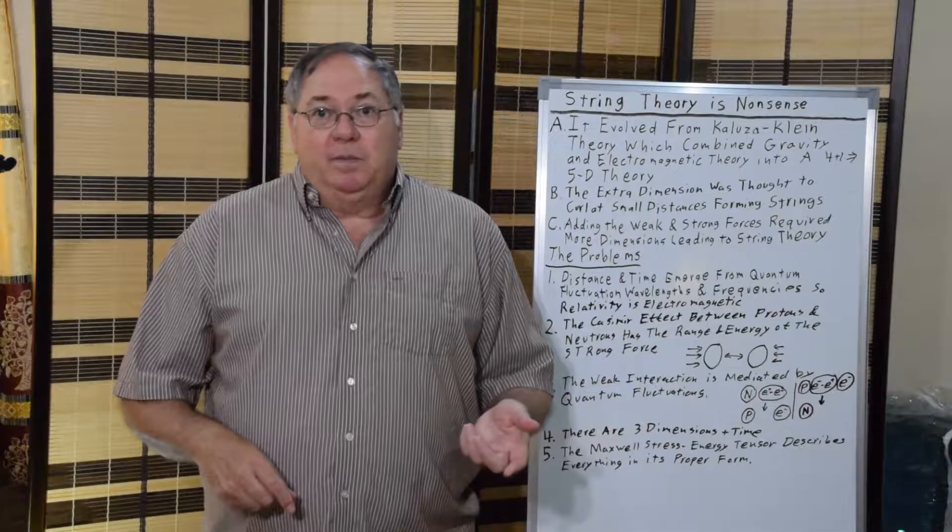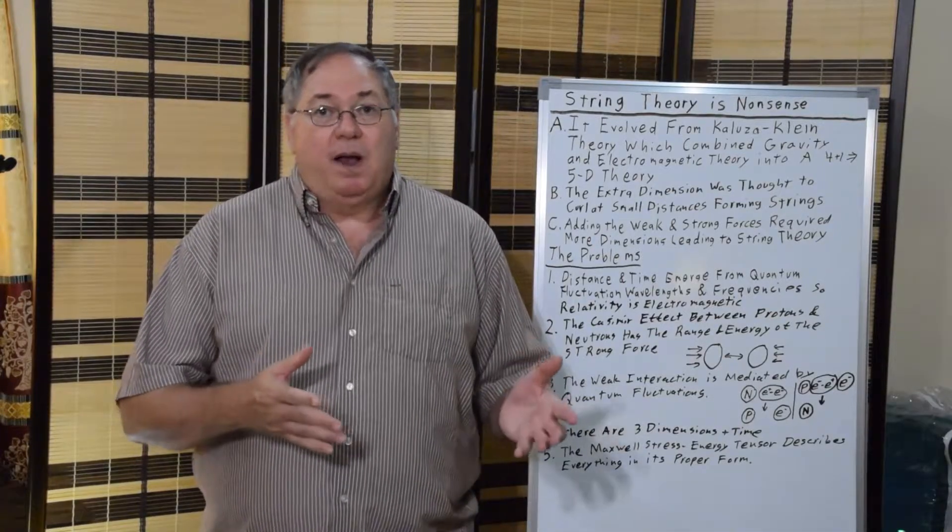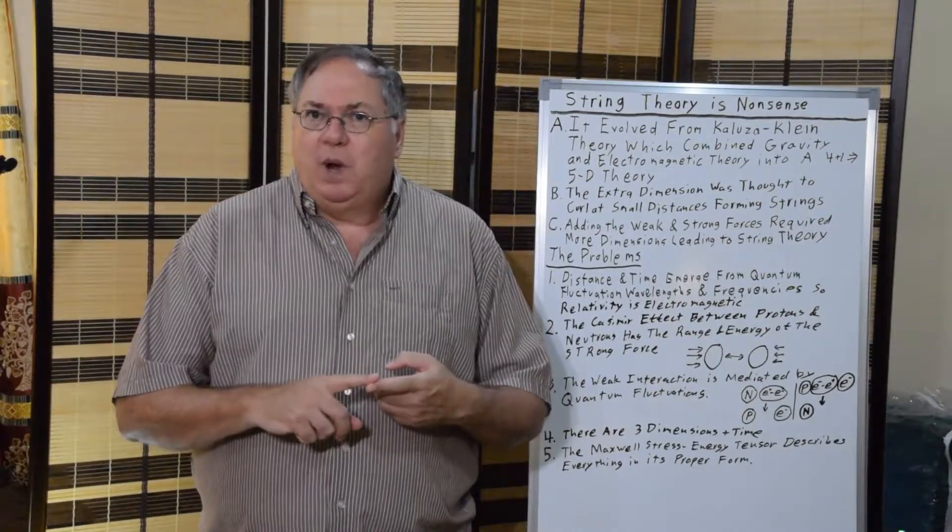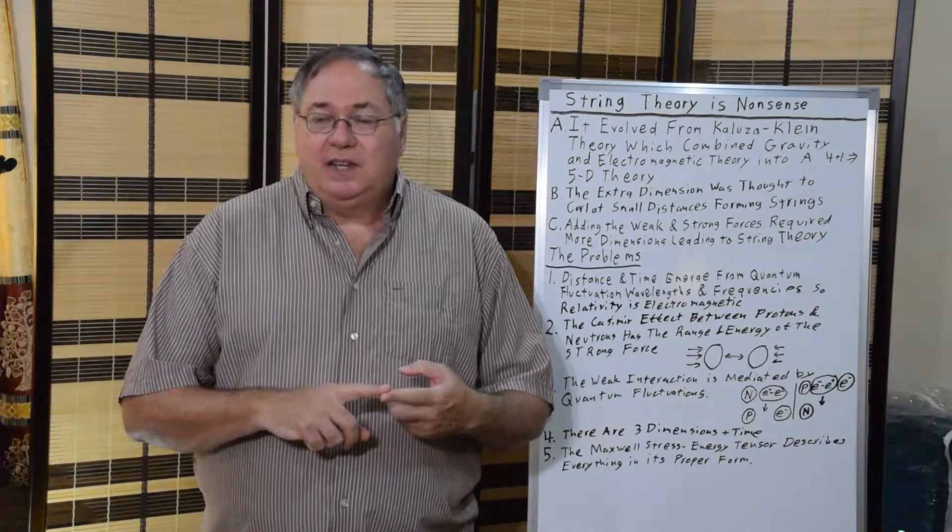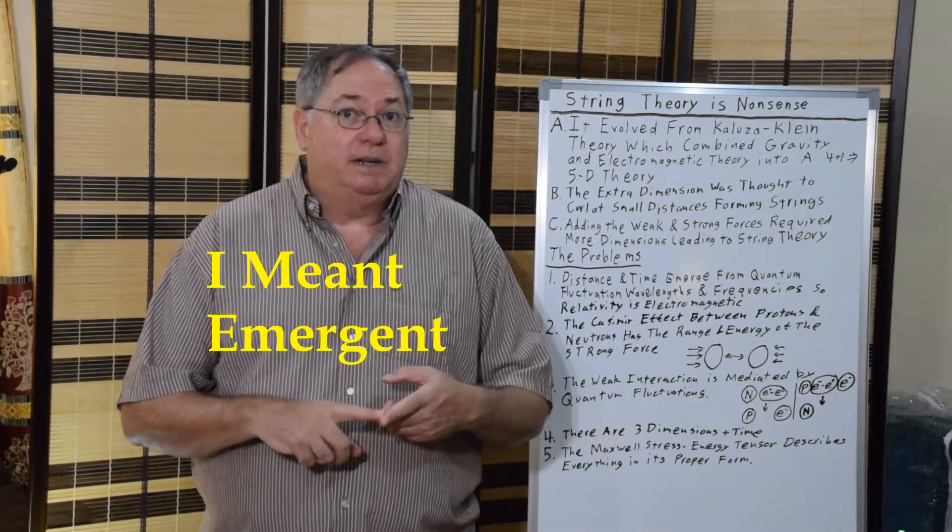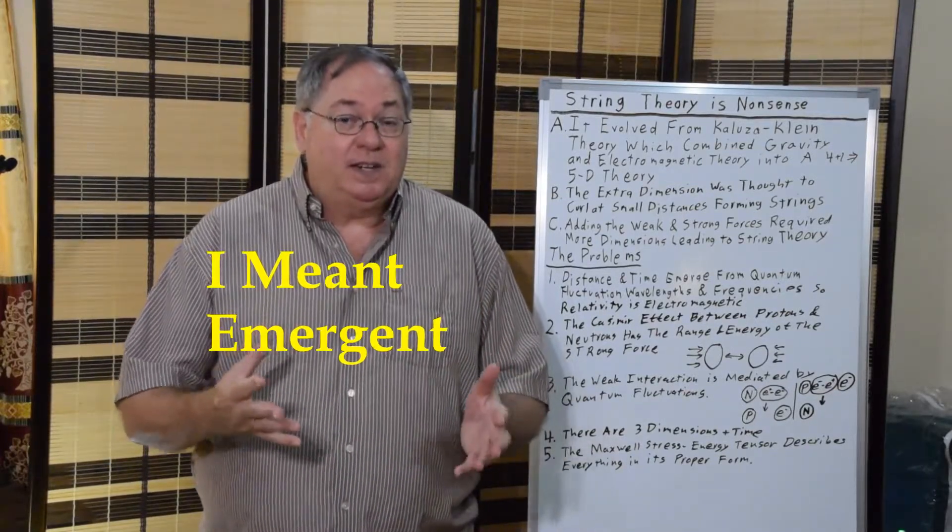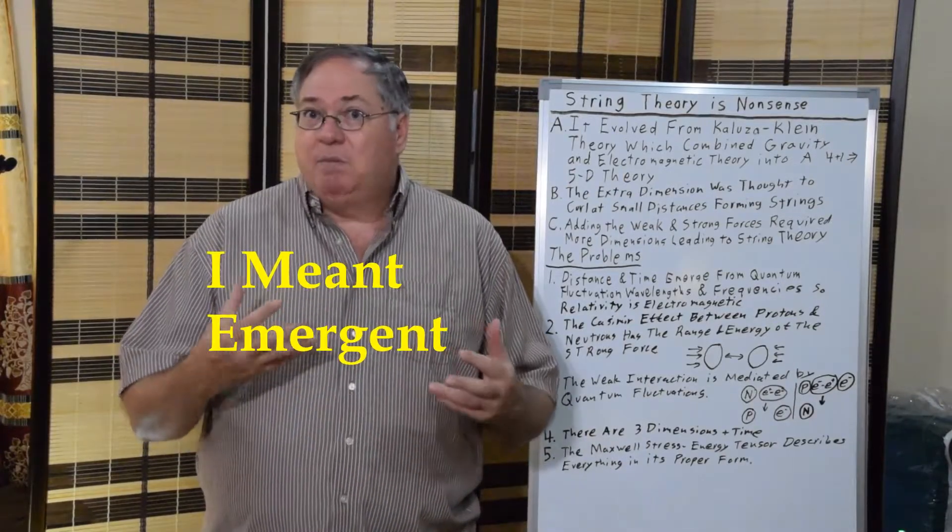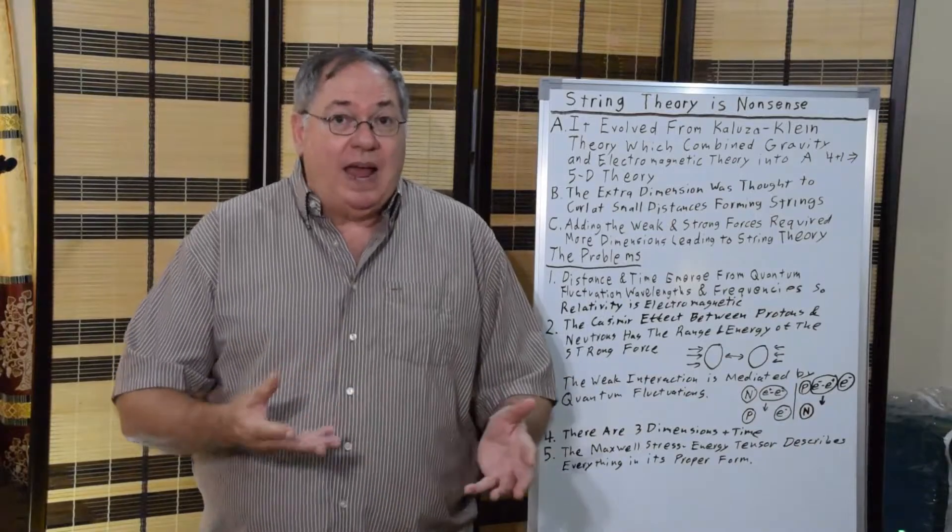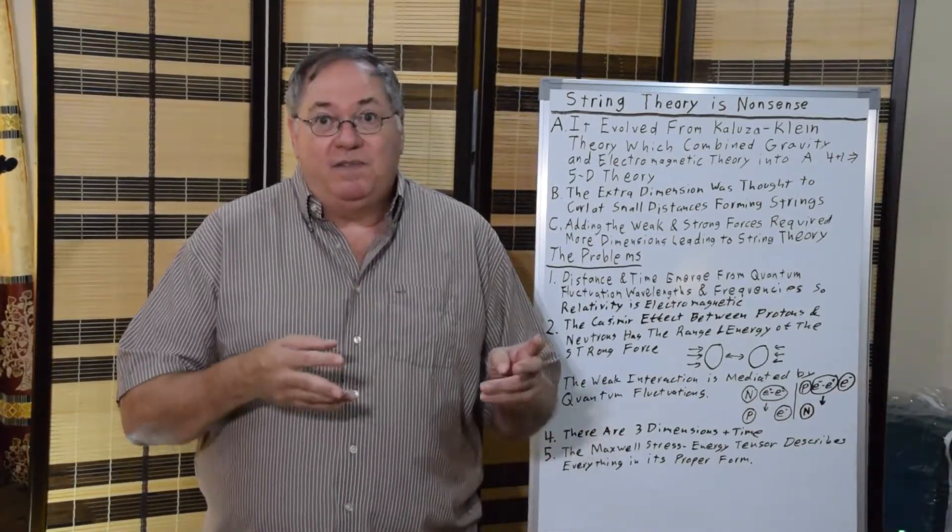And the basic problem with physics, the problems, one, they never bother to think of where do the dimensions and time come from. These are emergent properties of something. They're physically real. They're physically real properties. They emerge somehow from somewhere. And we need to know how in order to do the real physics.